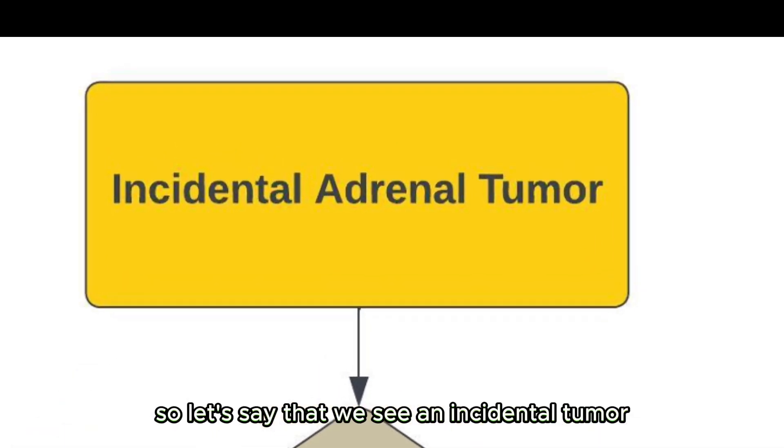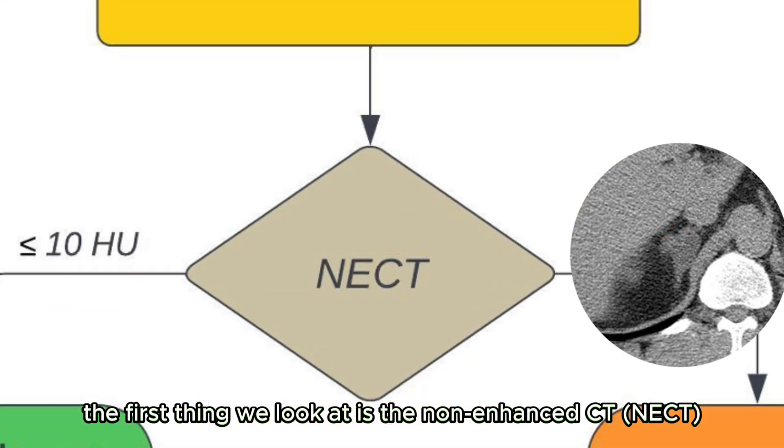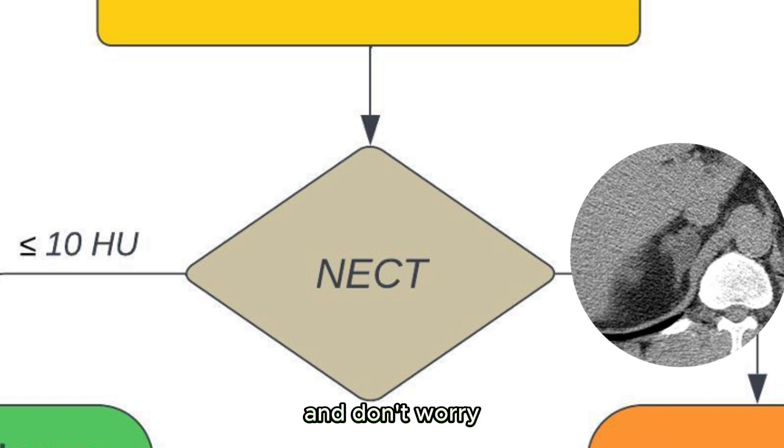So let's say that we see an incidental tumor in the adrenal gland. The first thing we look at is the non-enhanced CT, that is CT performed without any contrast. And don't worry, if we only have a contrast enhanced CT we can work our way around this. I will come back on that later in the video.